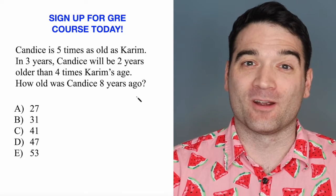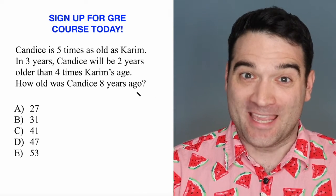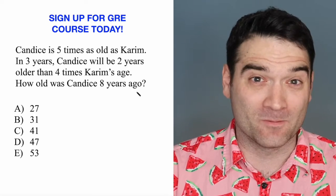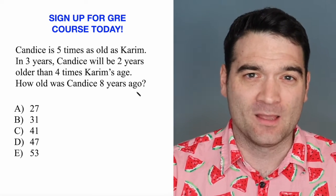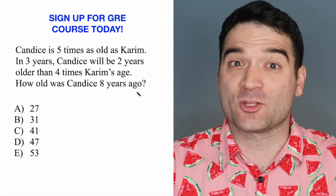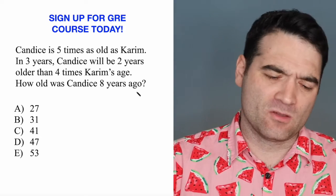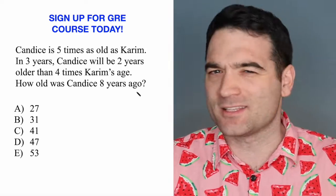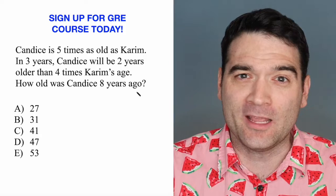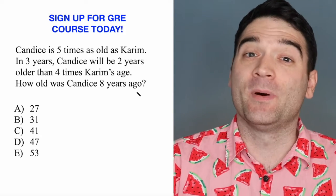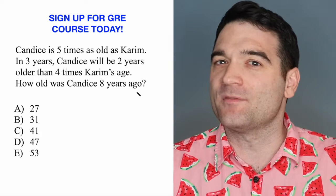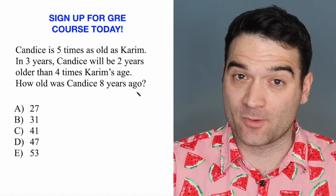I know that some of you are holding your phones right now, screaming — yes, this type of problem is the one that I struggle with. These age problems can be really, really tough. You could set up an algebraic equation with C and K, set them equal to each other, and solve it like that. But in this video, I'm going to show a little bit of a hack, a cheat code to get to the end of this question.